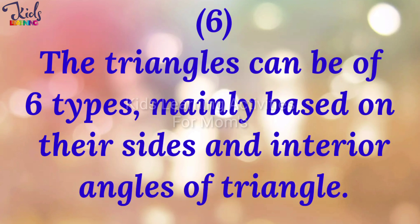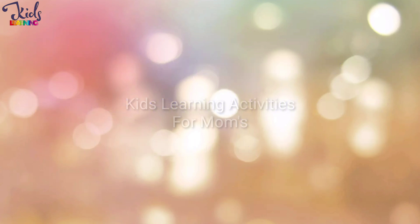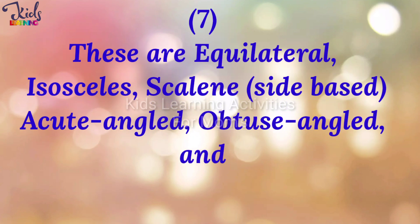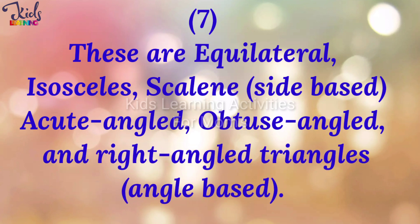Triangles can be of six types, mainly based on their sides and interior angles. These are equilateral, isosceles, and scalene (side-based), and acute angle, obtuse angle, and right angle triangles.